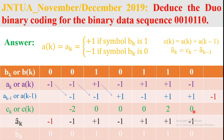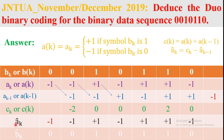Next, find the detection or decoding of the signal. The decoded signal is obtained using â(k) = c(k) - â(k-1). Subtracting a(k-1) from c(k): -2 - (-1) = -1; 0 - (+1) = -1; 0 - (-1) = +1; 0 - (+1) = -1; 2 - (+1) = +1; 0 - (-1) = +1. Wait, recalculating: -2+1=-1, 0-1=-1, 0+1=+1, 0-1=-1, 2-1=+1, 0-1=-1. This is the detected signal.